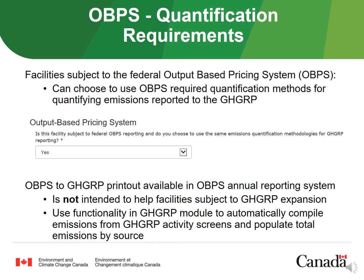Facilities subject to the Federal Output Based Pricing System Regulations may be aware that there are required methods to follow for quantifying emissions to be reported in the OBPS annual report. These methods are also allowable for your GHGRP report. Please note that the OBPS regulations refer to the GHGRP's 2017 methods for quantifying fuel combustion emissions. In the GHGRP reporting module, you must indicate if you are using these methods. If you select Yes, the methodologies on subsequent screens refer either to the 2017 GHGRP methods or other applicable OBPS methodologies. Note that it is not mandatory to use the OBPS quantification methodologies for reporting to the GHGRP — it is an option for those facilities subject to the OBPS regulations.